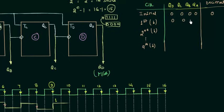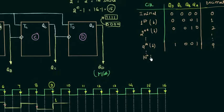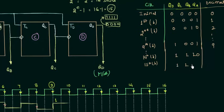Writing these down: for the 1st, QD QC QB QA = 0 0 0 1 (decimal 1); for the 2nd, 0 0 1 0 (decimal 2); for the 9th, 1 0 0 1 (decimal 9). For the 14th falling edge we have QD QC QB QA = 1 1 1 0, which is 8 plus 4 plus 2 equals decimal 14. For the 15th falling edge all bits are high — 1 1 1 1 — which is decimal 15.